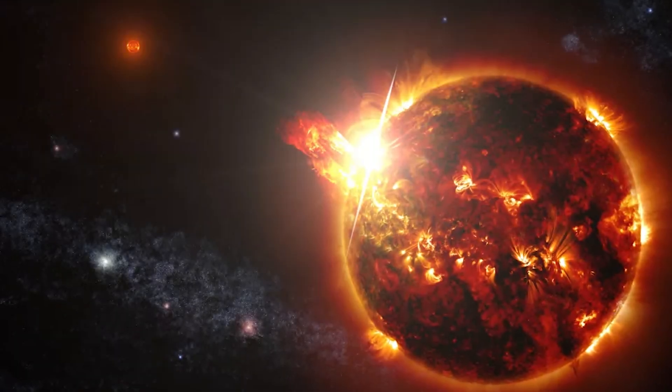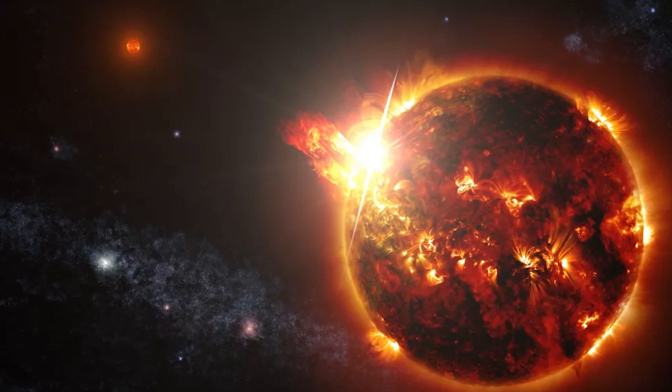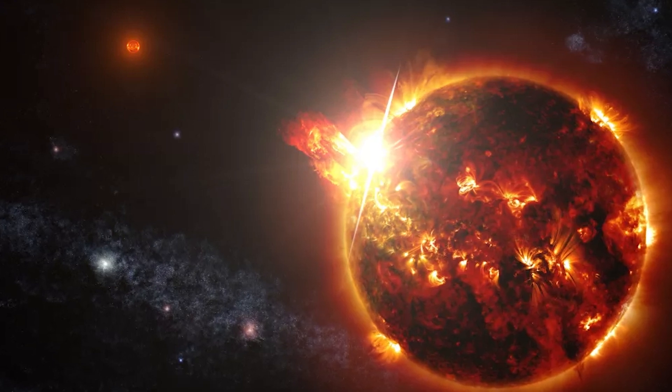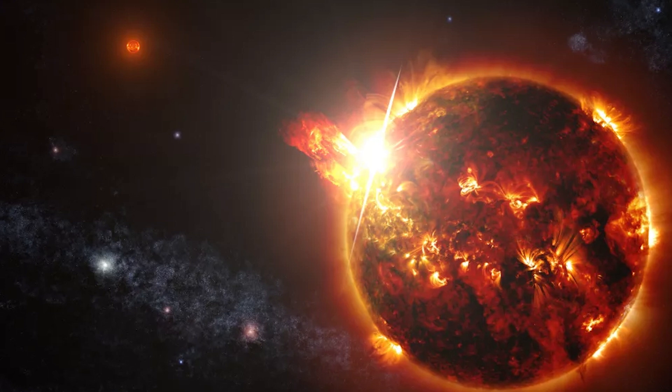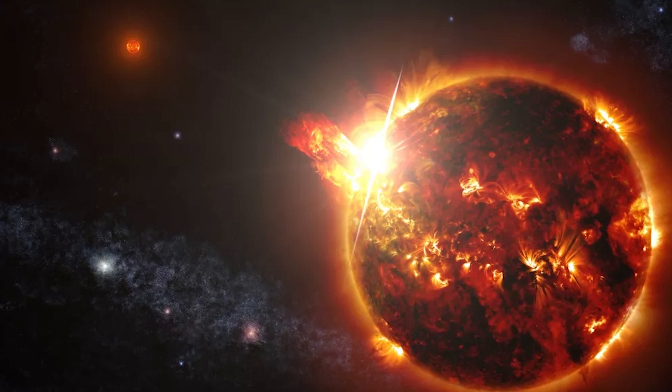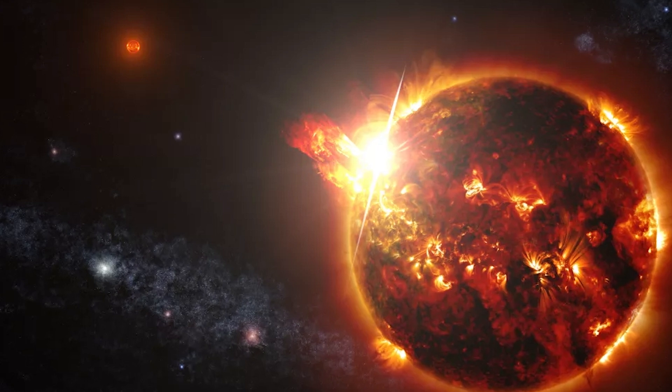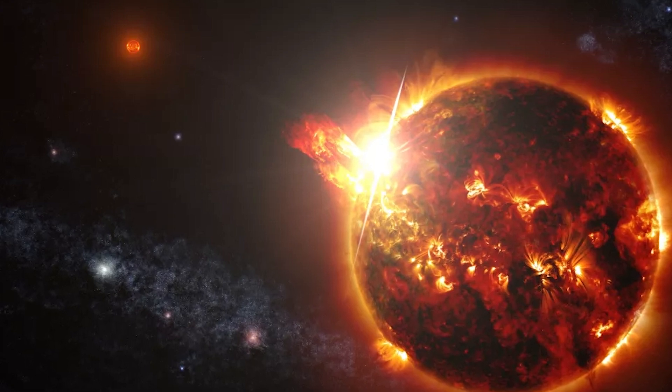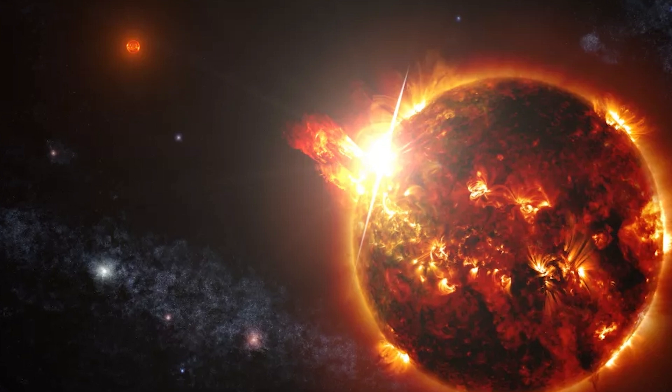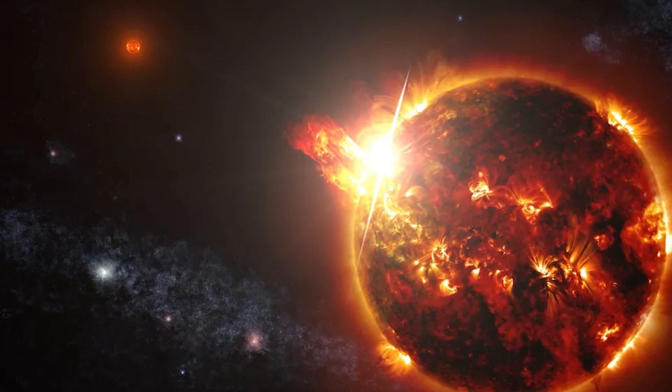Red dwarfs are a special type of main sequence star. They are the smallest stars and that makes them extremely abundant and long-lasting. Astronomers estimate red dwarfs amount to 70% of all the stars in the universe and can live for trillions of years, which means not a single one has burned out since the universe began. They'll outshine our sun and all the other stars along with it.